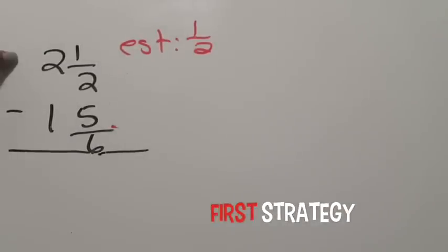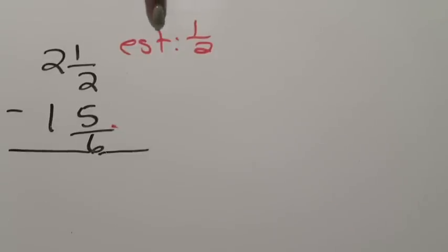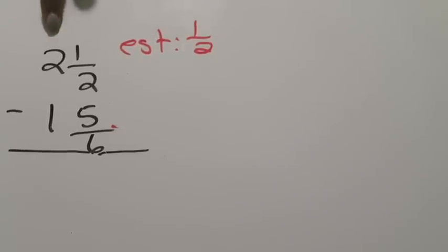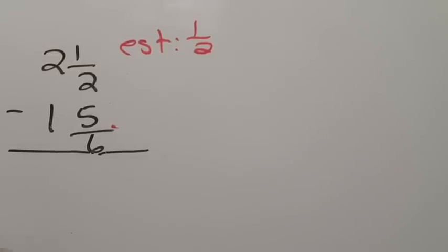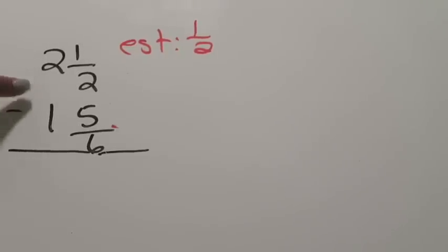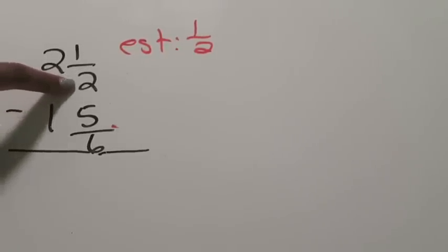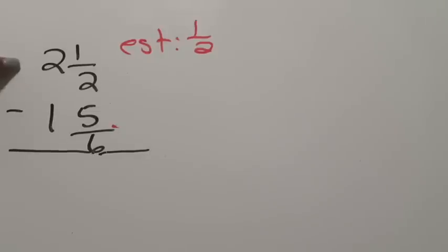Here we have our first problem. We're going to take two and a half minus one and five sixths. The first thing I want to do in these types of problems is come up with my estimated answer. My estimated answer is a half. Just to refresh our memory: when you're rounding fractions you're going to round them to three benchmarks — zero, a half, or a whole. Two and a half already includes the benchmark of a half, so no need to touch that one.